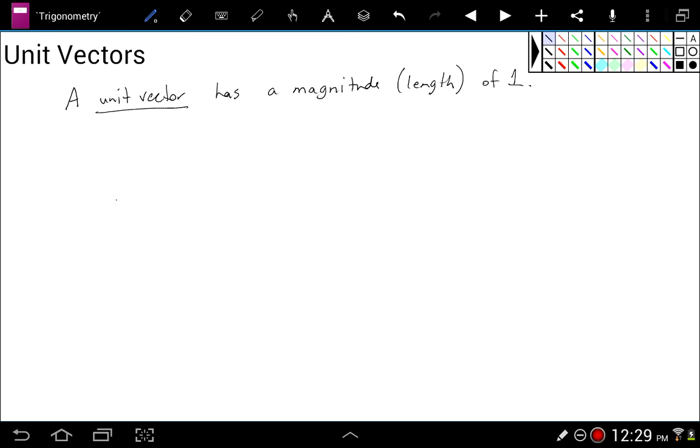So this is a unit vector if its length is one. This is a unit vector, this is a unit vector, that's a unit vector. These are all unit vectors if they have a length of one. So no big deal, very simple.